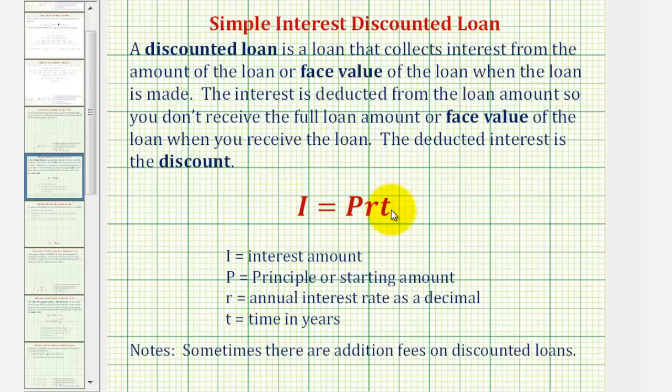And T is time, which must be in years. Now it should be noted that sometimes there are additional fees for discounted loans.